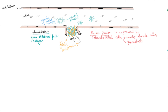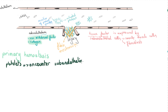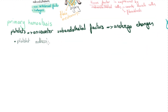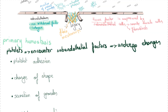After a vascular injury, subendothelial components such as von Willebrand factor and collagen are exposed because the endothelium has been injured and the subendothelium is now exposed to the vessel lumen. When platelets traveling in the blood encounter these factors, they undergo changes that can be divided into four categories: platelet adhesion, rapid change of shape, secretion of granule contents, and platelet aggregation.